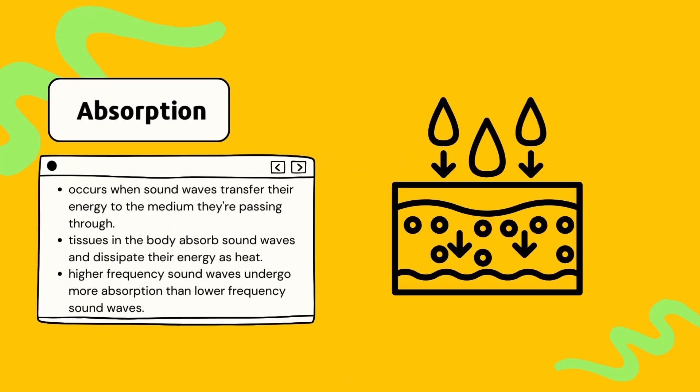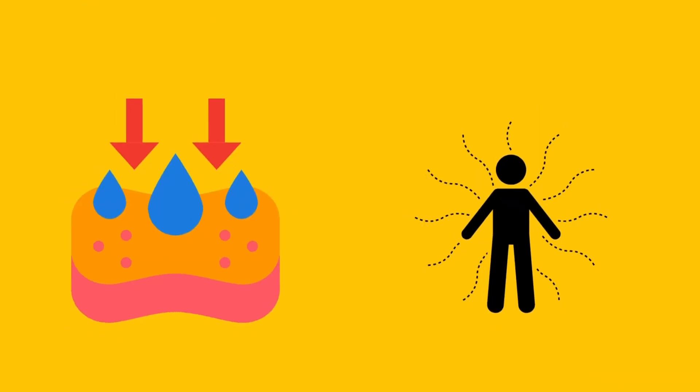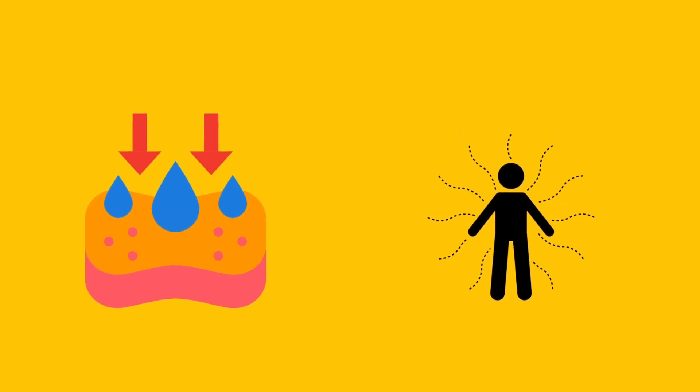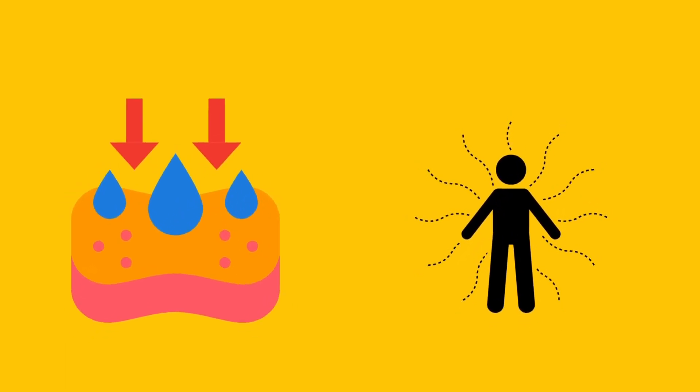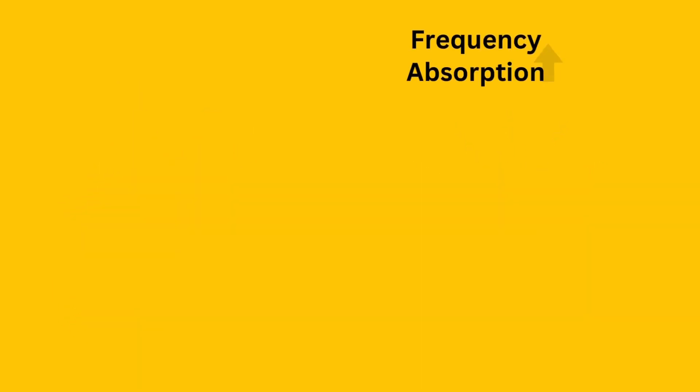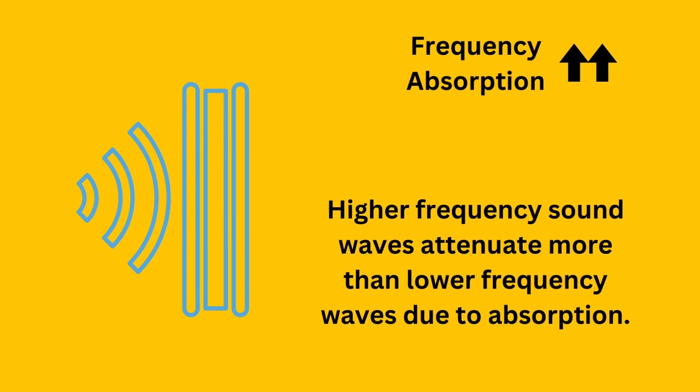Now let's dive into absorption, the final process contributing to attenuation. Absorption occurs when sound waves transfer their energy to the medium that they're passing through, resulting in a decrease in intensity as the waves penetrate deeper into the tissue. To understand absorption, let's consider a sponge soaking up water. Just as the sponge absorbs water and becomes saturated, tissues in the body absorb sound waves and dissipate their energy as heat. A key thing to note is that absorption is directly related to frequency. The higher the frequency, the more attenuation that occurs due to the high rate of absorption.